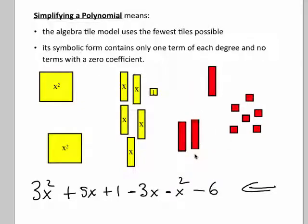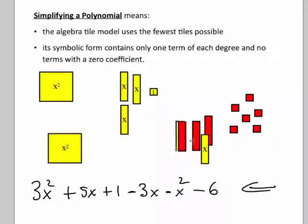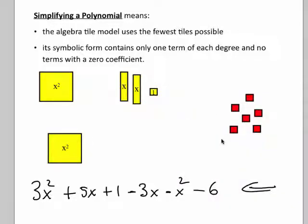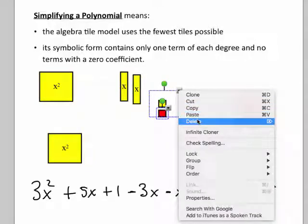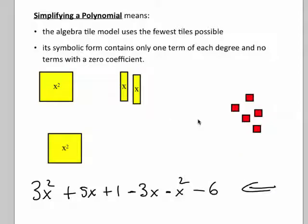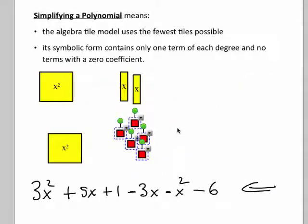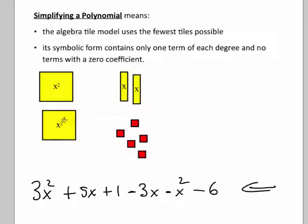Similarly, three of these red strips will cancel three positive x strips. They will add to zero. So those go away. And one of these negative x blocks will combine with a positive x block to give us nothing. So what I have left is the same as I had originally, but in simplified form. I'm using the smallest number of tiles I possibly can.